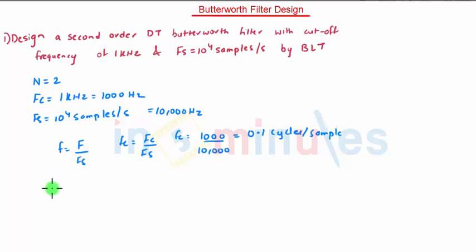Angular frequency is given as ωC equals 2πFC. That is 2π times 0.1. That will give us 0.2 radians per sample.